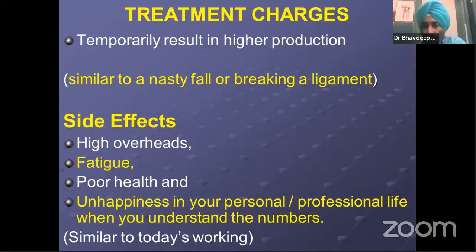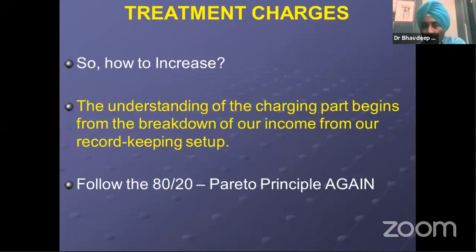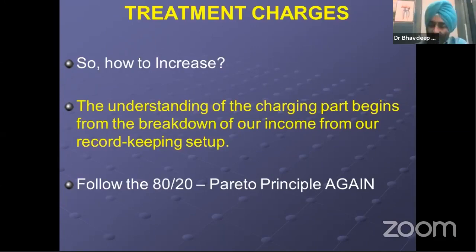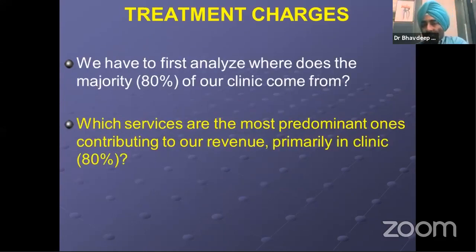So how to increase the charges? Let's come to the main point. The basis of this is from your record keeping. The reason is you have to follow the 80-20 principle. We first have to analyze which services are giving us 80% revenue — those 20% of services that predominantly contribute to 80% of revenue. Those services will be just a handful — let's suppose crown and bridge bills are 60% of your total collection, and root canal adds another 20%. So your majority income comes from root canal and crown and bridge.